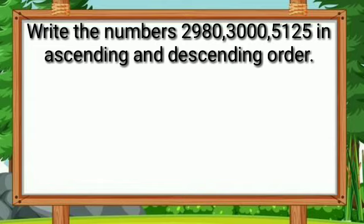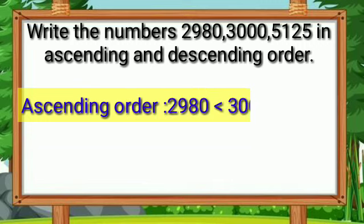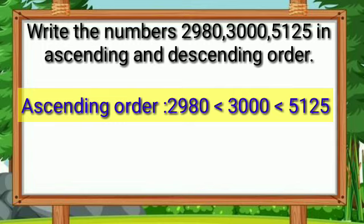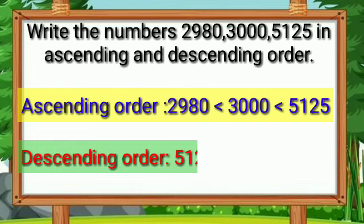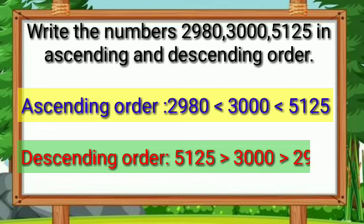Let's arrange in ascending order — smallest to biggest. 2,980 is smaller than 3,000. 3,000 is smaller than 5,125. Next, let's arrange in descending order — biggest to smallest. 5,125 is greater than 3,000 and 3,000 is greater than 2,980.